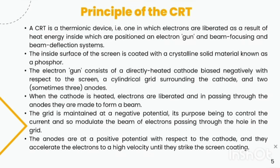The electron gun consists of a directly heated cathode biased negatively with respect to the screen, a cylindrical grid surrounding the cathode, and two, sometimes three, anodes. When the cathode is heated, electrons are liberated and in passing through the anodes, they are made to form a beam.